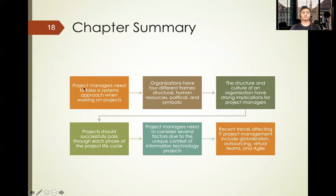Chapter summary: A project manager needs to take a system approach when working on a project. Organizations have four different frames: structural, human resource, political, and symbolic. The structure and culture of an organization have strong implications for the project manager. The project should successfully pass through each phase of the project life cycle. The project manager needs to consider several factors due to the unique context of IT projects. Recent trends affecting IT project management include globalization, outsourcing, virtual teams, and agile.